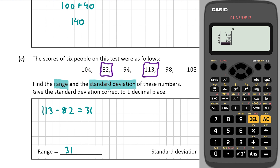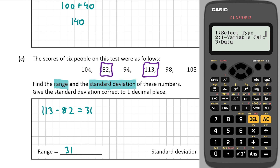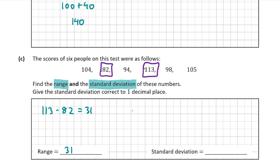Once you've entered all the numbers, on the older version click Shift then the first button; on the newer version click Option, then 2 for one variable calculation. The value you want is the one with the sigma x symbol, which is the second from the bottom — it reads 9.758. To one decimal place that's 9.8, so the standard deviation of those six people is 9.8.